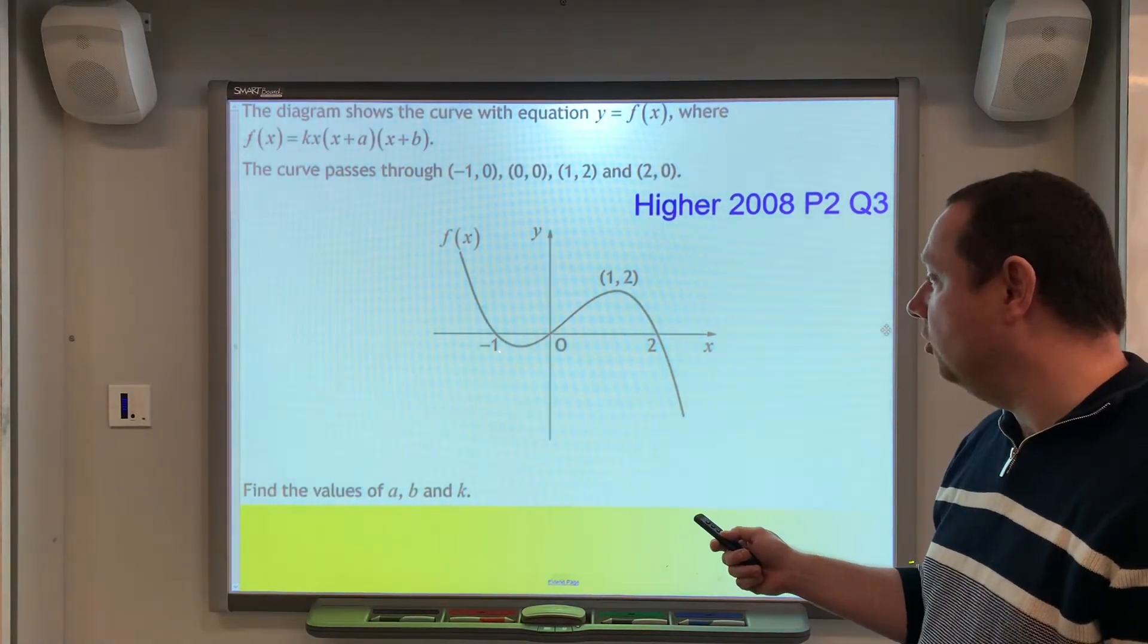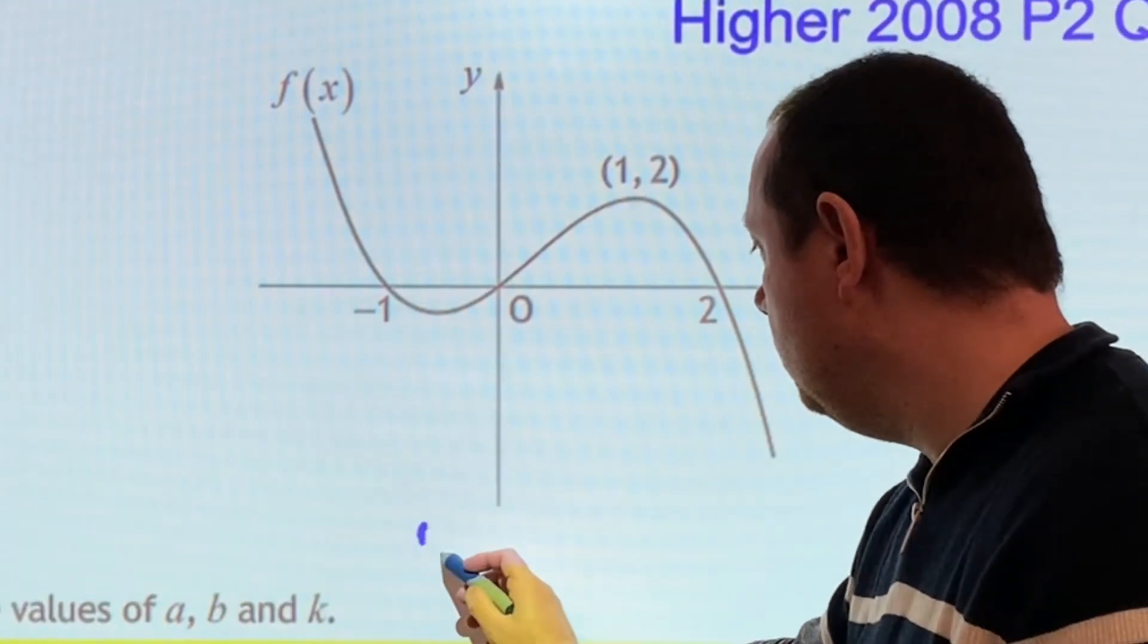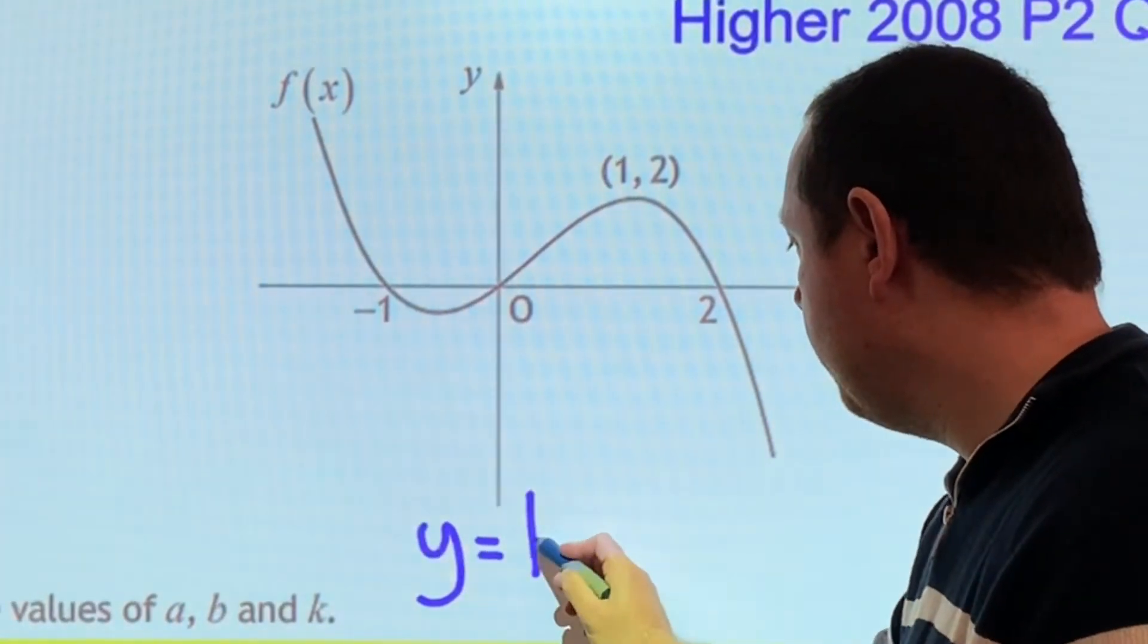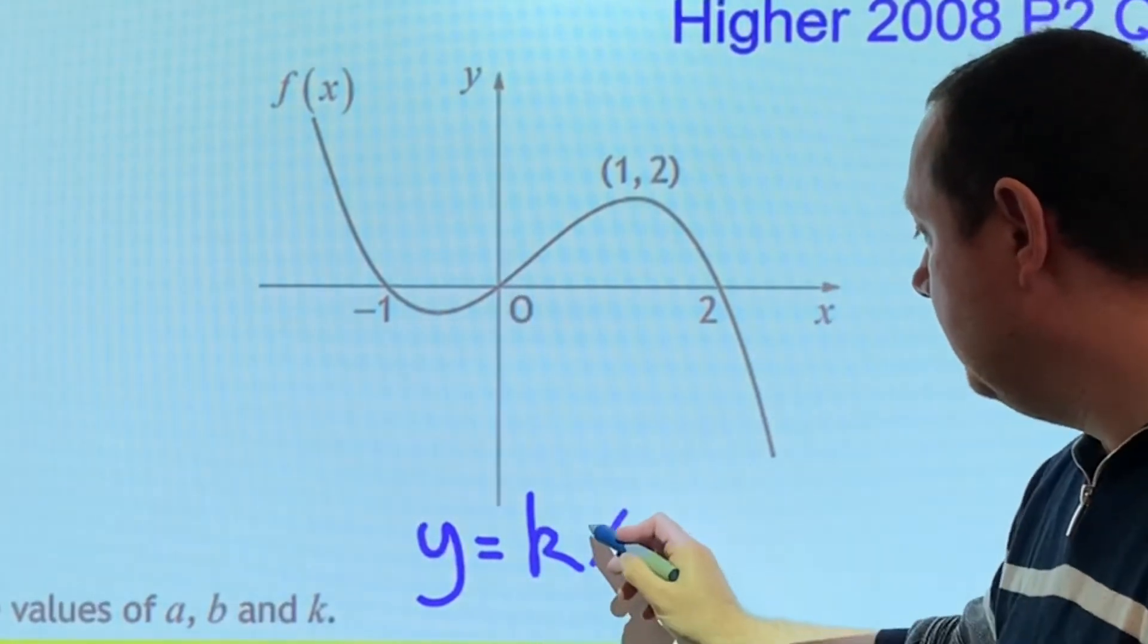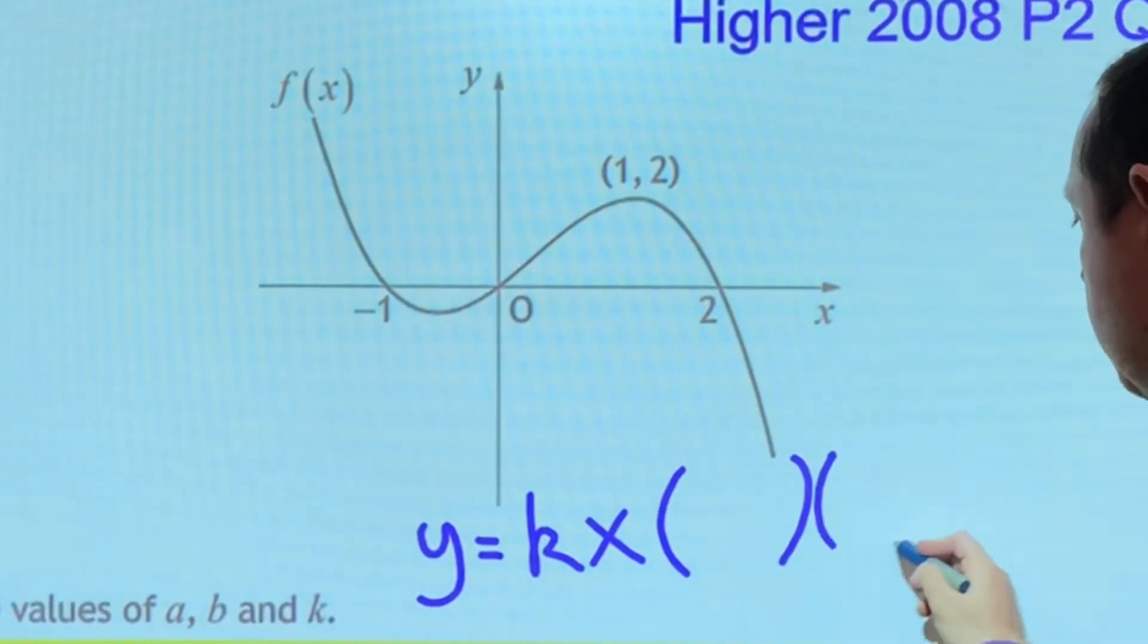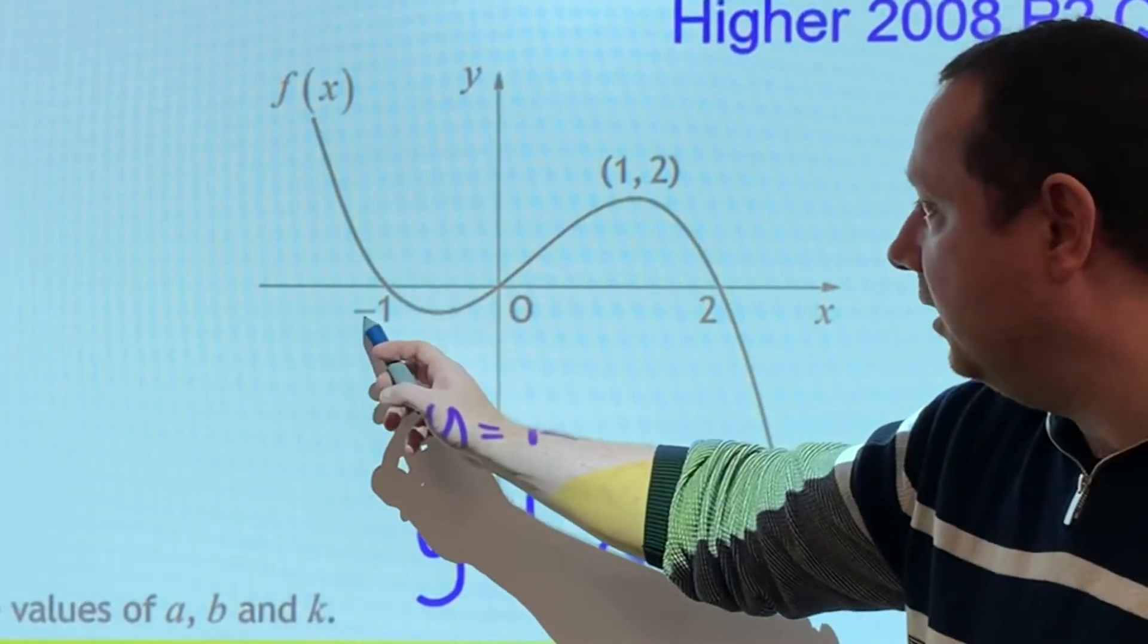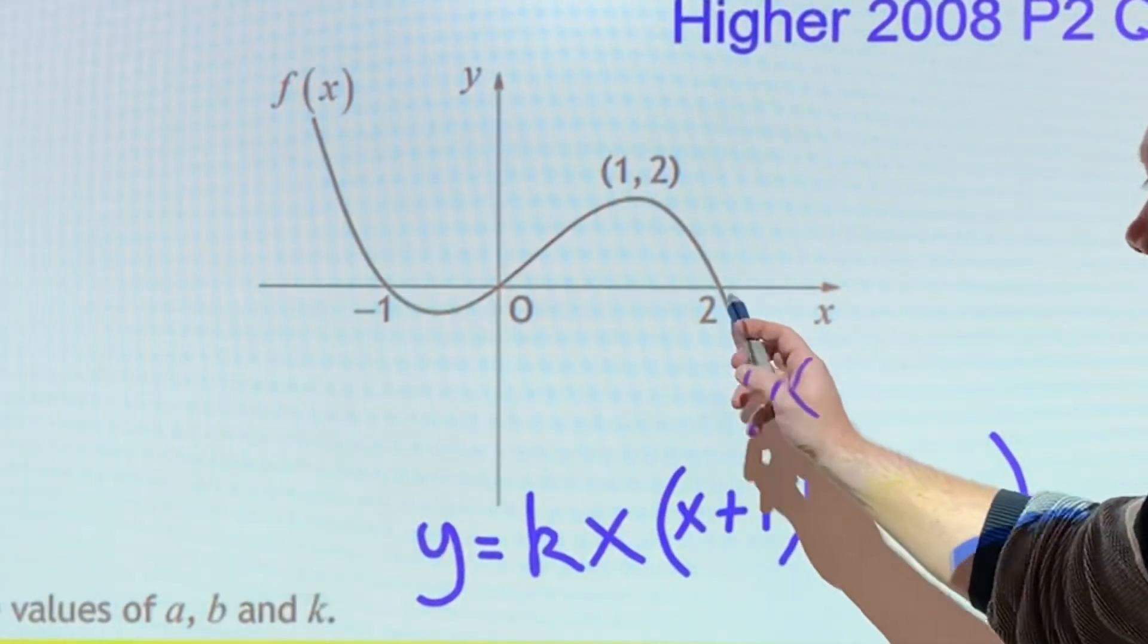So, let's have a look at these roots. We'll just do it the same way. So, y equals k, so x, add 0, so it's just x. Two brackets, x minus minus 1, so x add 1, and the other one, x minus 2.